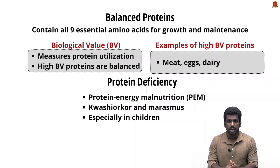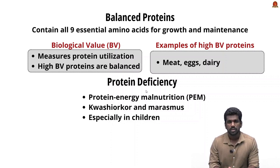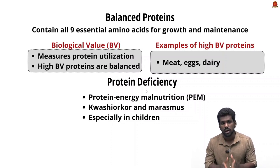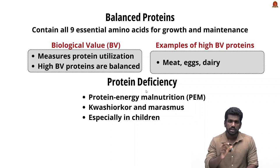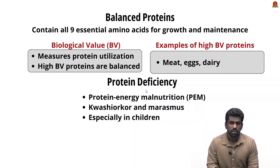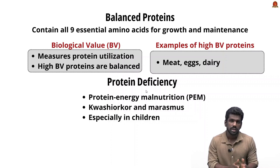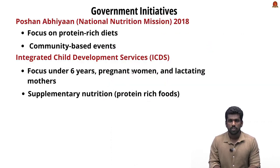Balanced proteins are proteins that contain all nine essential amino acids in sufficient quantities. Biological value measures the efficiency with which protein is used in the body. Proteins with all essential amino acids in adequate amounts are considered high biological value proteins, termed as balanced proteins. Essential amino acids must be taken through diet, while non-essential amino acids can be synthesized by the body.